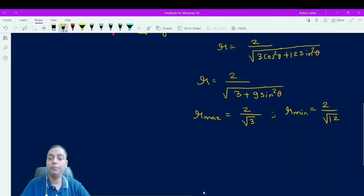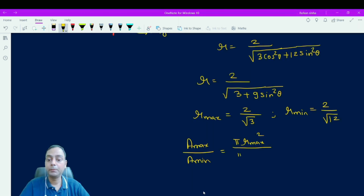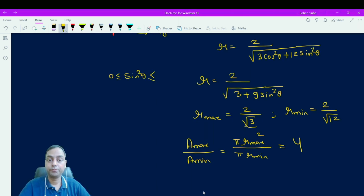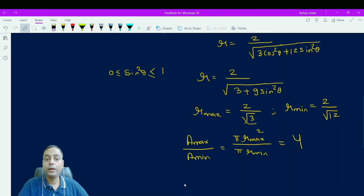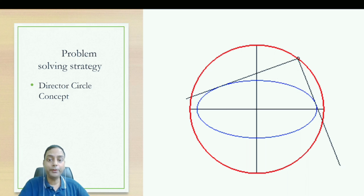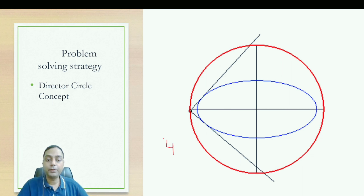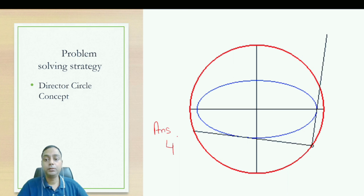The ratio of maximum to minimum area is A_max/A_min = πr_max² / πr_min² = r_max²/r_min². Substituting the values, this ratio equals 4. Since sin²θ varies from 0 to 1, putting sin²θ = 0 gives the maximum radius and sin²θ = 1 gives the minimum. So the answer to this problem is 4. Hope you understand the solution. These types of problems are very important for JEE Mains and Advanced. Thank you and see you in the next video.